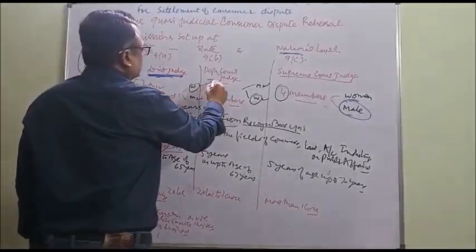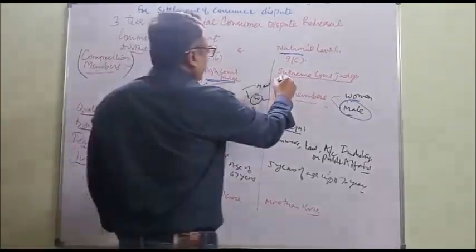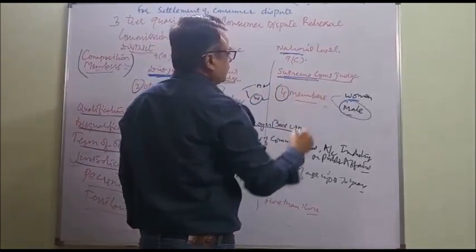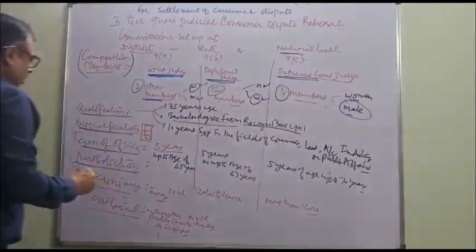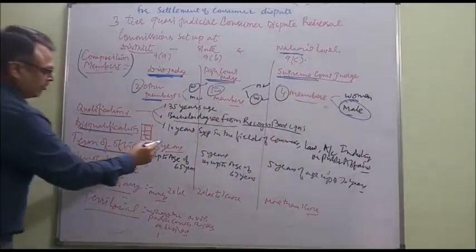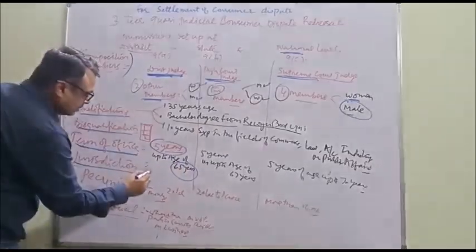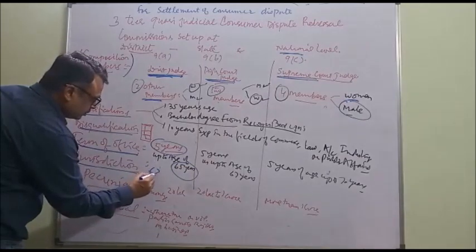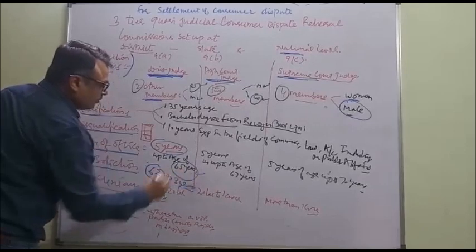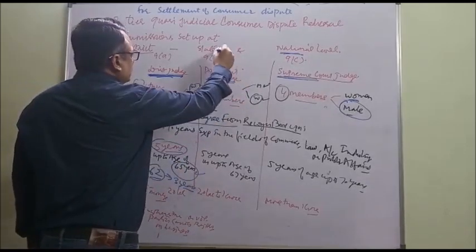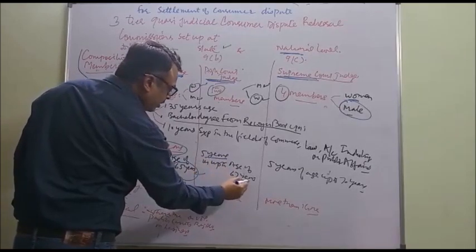In case of State Commission, the first member is a judge of the High Court, and in case of National Commission, the first member is a judge of the Supreme Court. The term of office of the commission members is 5 years or up to the age of 65 years. For example, if a person is aged 62 years, then his period of office is 3 years, that is up to the age of 65 years. In case of State Commission, the period of office is 5 years and up to the age of 67 years.